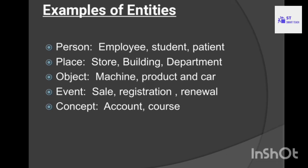Examples of entities: entities may be persons, places, objects, events, and concepts. For persons: employee, student, patient — every employee has properties like employee ID, employee name, and employee designation. For places: store, building, department. For objects: machine, product, car. For events: sale, registration, renewal. For concepts: account and codes — for example, an account entity has properties like account number, account type, and IFSC code. I hope entity is clear.